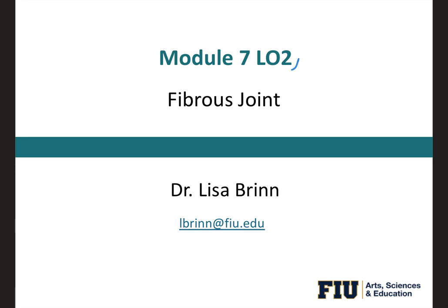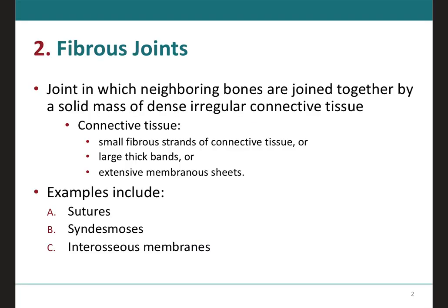In learning outcome number two, we're going to be talking about the first type of joint based on structure, which is the fibrous joints. These are joints in which the neighboring bones are joined together by a solid mass of dense irregular connective tissue.